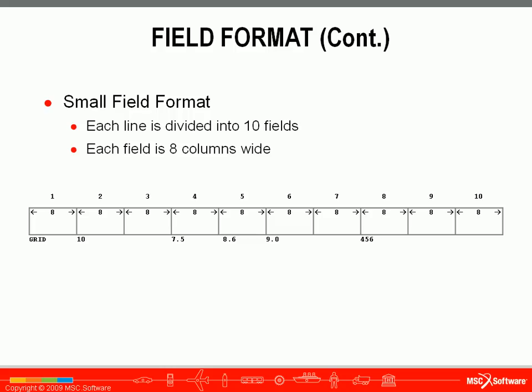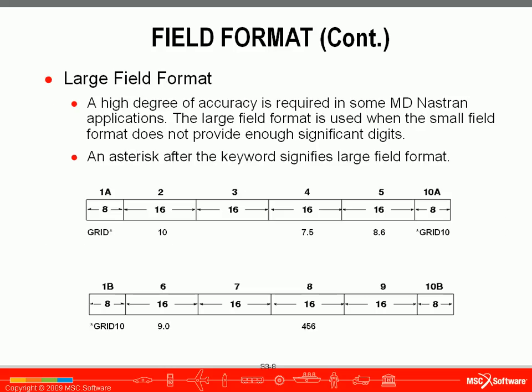Note that each field is only 8 characters wide, which brings us to the large field format. If more precision is required to enter a value, we can use this format, which is indicated by an asterisk after the keyword. So here we have GRID*, indicating that the remaining fields will be 16 characters wide and spread out over two lines. Fields 2 through 5 are on the first line, each 16 characters wide, and fields 6 through 9 are on the second line, allowing more digits for more precision.